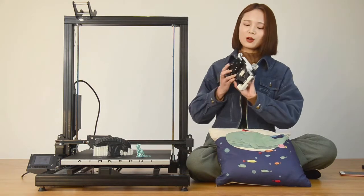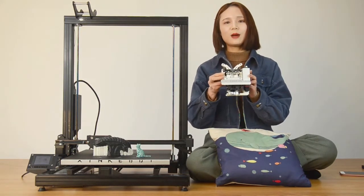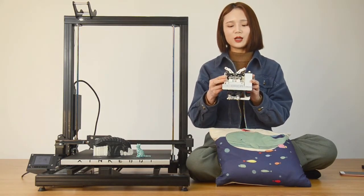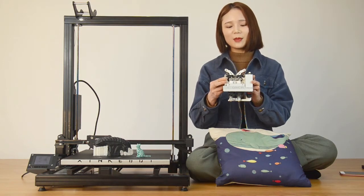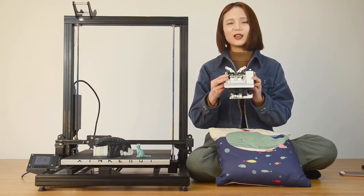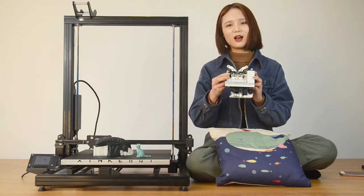The dual extruder of Orca 2 Cygnus adopts the traditional approach of having two hot ends on one carriage and therefore alignment is the key to making it work perfectly. Now let's have a close look at the dual extruder of Orca 2 Cygnus.